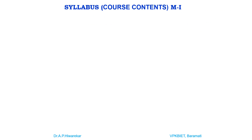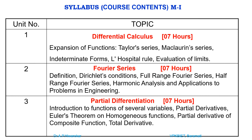The syllabus for Engineering Mathematics 1 is unit-wise and contains 6 units, each requiring approximately 7 hours. Unit 1 is Differential Calculus, which consists of expansion of functions, Taylor series, Maclaurin series, Indeterminate Forms, L'Hôpital's rule, and Evaluation of Limits.